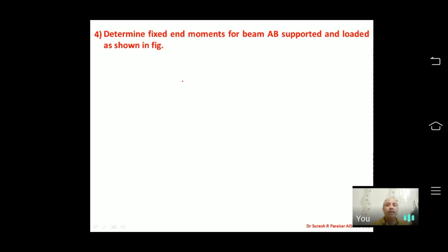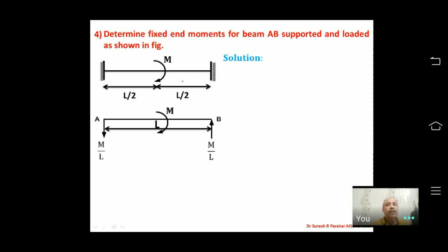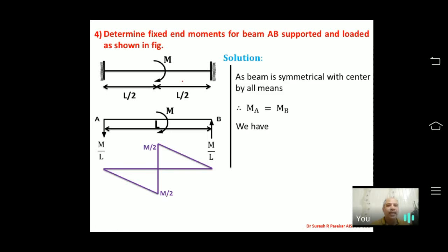Fourth problem: determine fixed end moments for a beam with a couple M acting at the center. When we draw the simply supported BMD for a couple at the center, we get half a triangle on the positive side and half on the negative side, so the net area A = 0. Therefore A = A' cannot be used directly, and we must return to the basic differential equation.